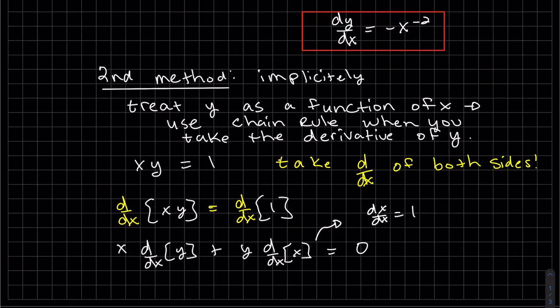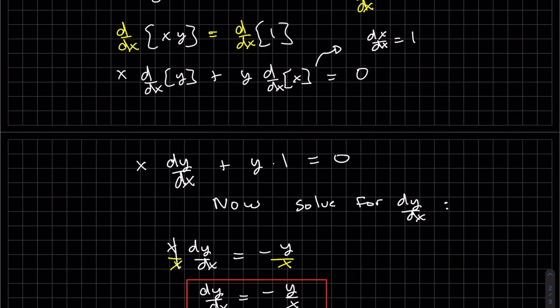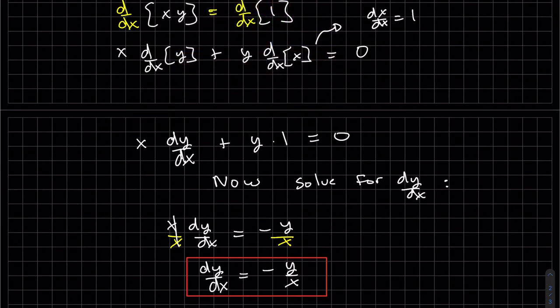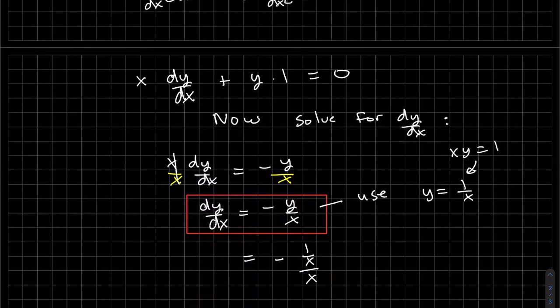So there's our answer, and it's not wrong just because it doesn't match the first method. You can't always get it all in terms of x, but in this case we can. We know y is one over x from above because xy equals one, so that's minus one over x squared, which is the same as above.